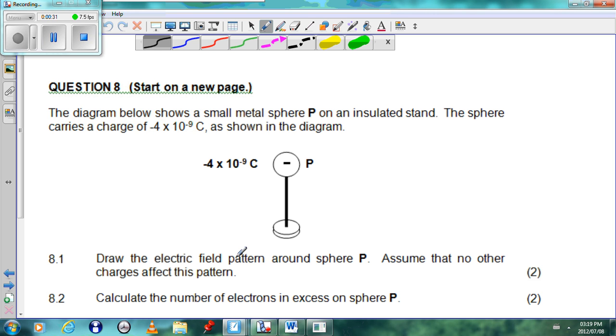Now the first question says draw the electric field pattern around sphere P. Assume that no other charges affect this pattern.